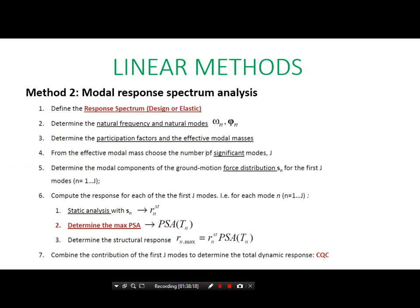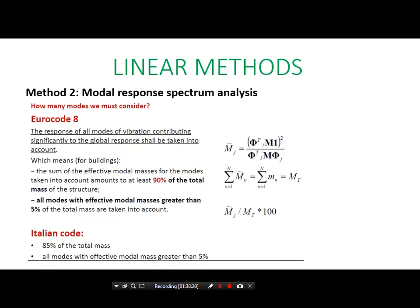Method two, you know it: modal response spectrum analysis. We have different steps. We perform the modal analysis, we find the period, and then we continue. We find the acceleration and so on, and then we find the modal mass participation. It should be more than 85 percent according to the Italian code, and it should be more than 90 percent according to Eurocode.